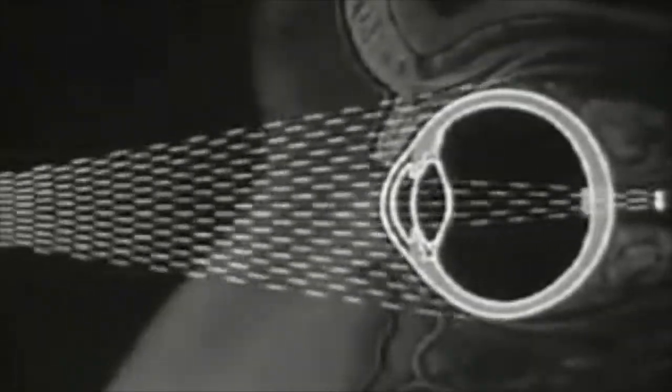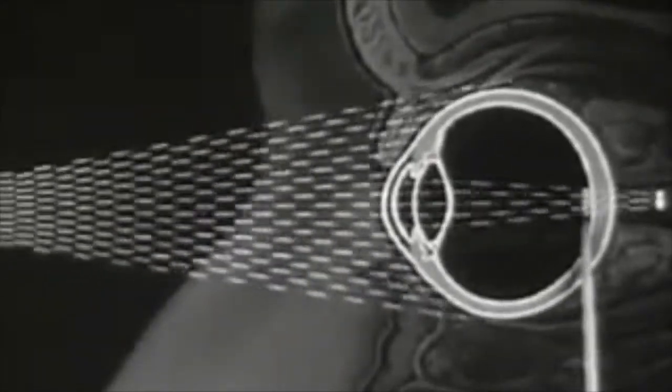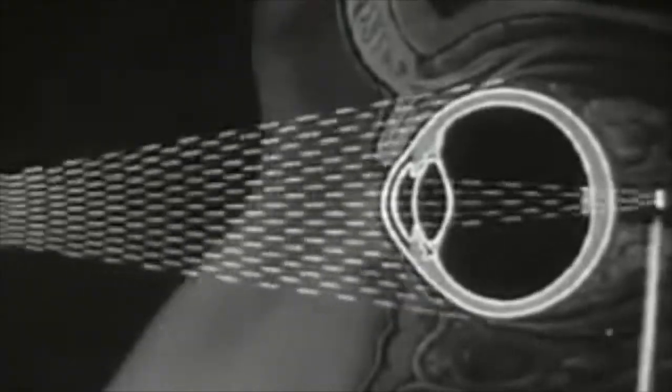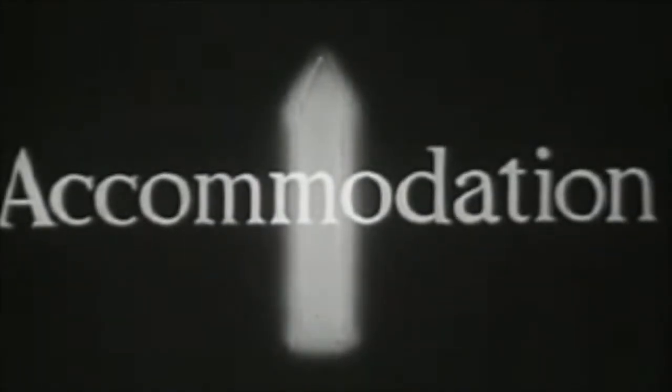But if a distant object approaches the eye, the angle between entering rays again grows larger. This increasing angle changes the direction of the light rays as they pass through the lens, so that the sharp image falls behind the retina. As a result, the image upon the retina tends to become blurred. This blurring causes a response or reflex within our brain which brings about harmonious internal adjustments of all parts of the eye. This adjustment is called accommodation.